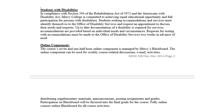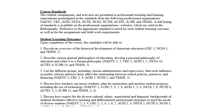This is an online class. Here you see the course standards — the professional standards around which this course is organized. I want to draw your attention to the student learning outcomes. By the end of the course, you should be able to provide an overview of the historical development of American education, describe various general philosophies of education, develop a personal philosophy and relate it to a formal philosophy, and list different groups including administrators and supervisors that exert influence on public schools and how these affect the relationship between school policies, practices, and financing. I will let you read the rest of these outcomes on your own.